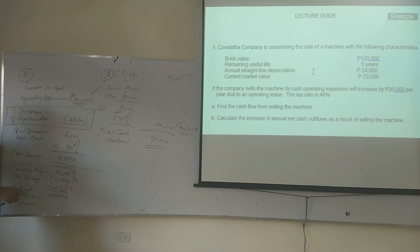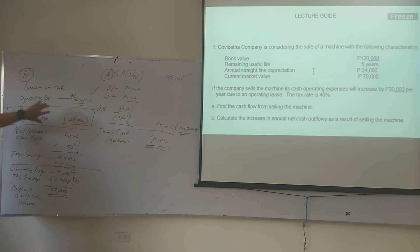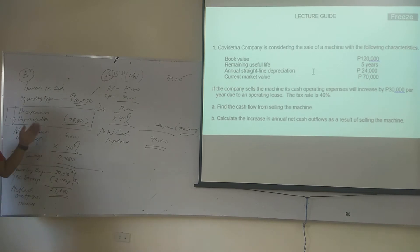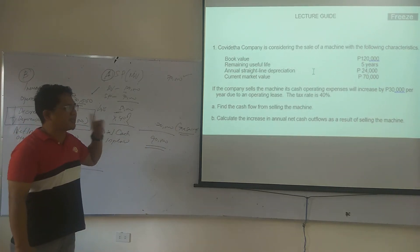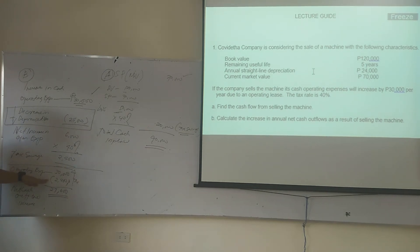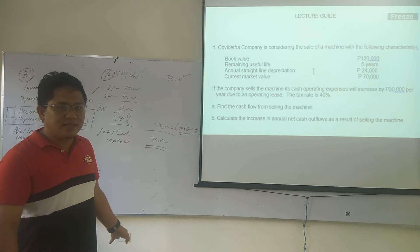As a result of selling the machine, operating expenses increase by 30,000, but we lose the depreciation expense of 24,000, so the net increase is only 6,000. Computing the tax effect at 40%, we save 2,400. Although cash expenses increase by 30,000, the tax effect reduces it by 2,400, so the net cash outflow is 27,600.